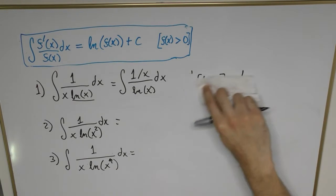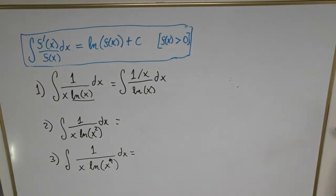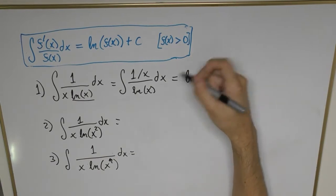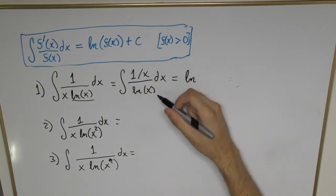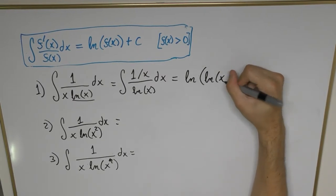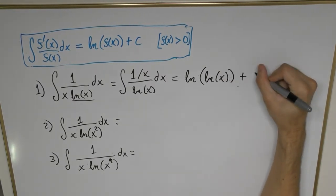So following that procedure, we can now write the final answer as the natural log of whatever function is already in the denominator, which is going to be ln(ln(x)) + C.